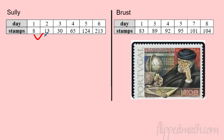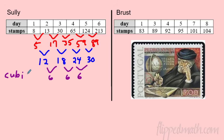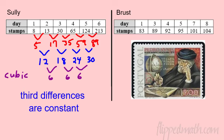For Mr. Sullivan, first differences are 5, 17, 35, 59, 89 — not constant. Second differences: 12, 18, 24, 30 — still not constant. But the third differences are all 6, adding 6 every time. So the rate of change of the rate of change of the rate of change is constant — that gives us a cubic function. The third differences are constant.